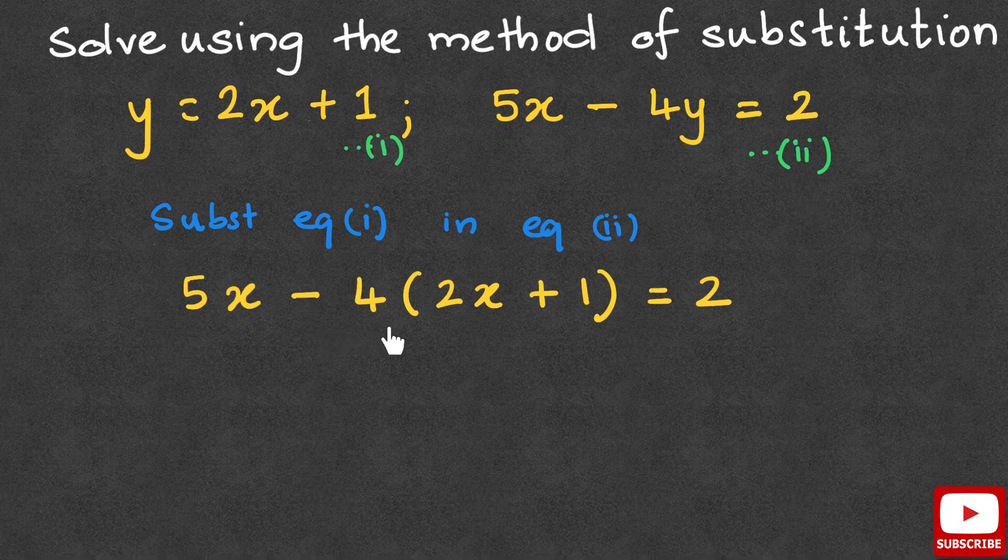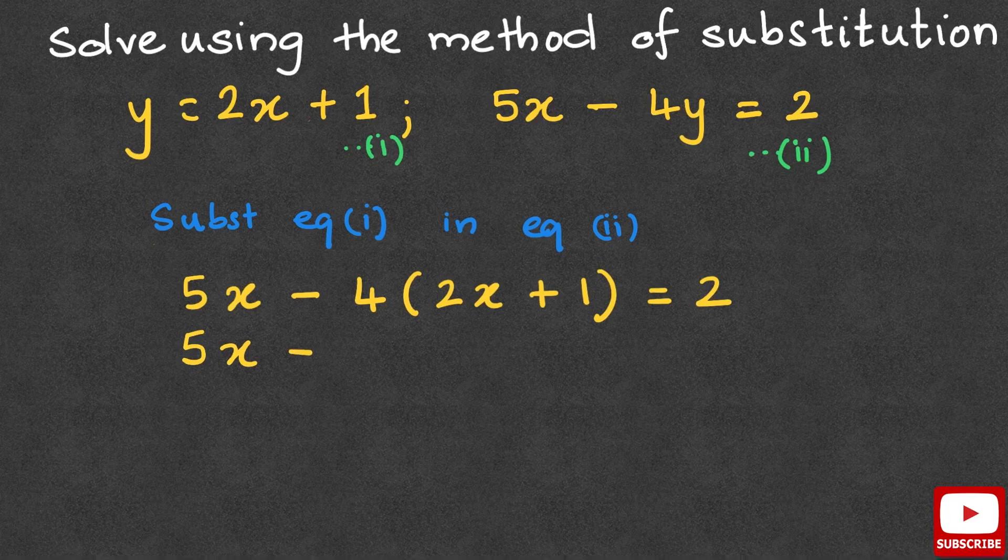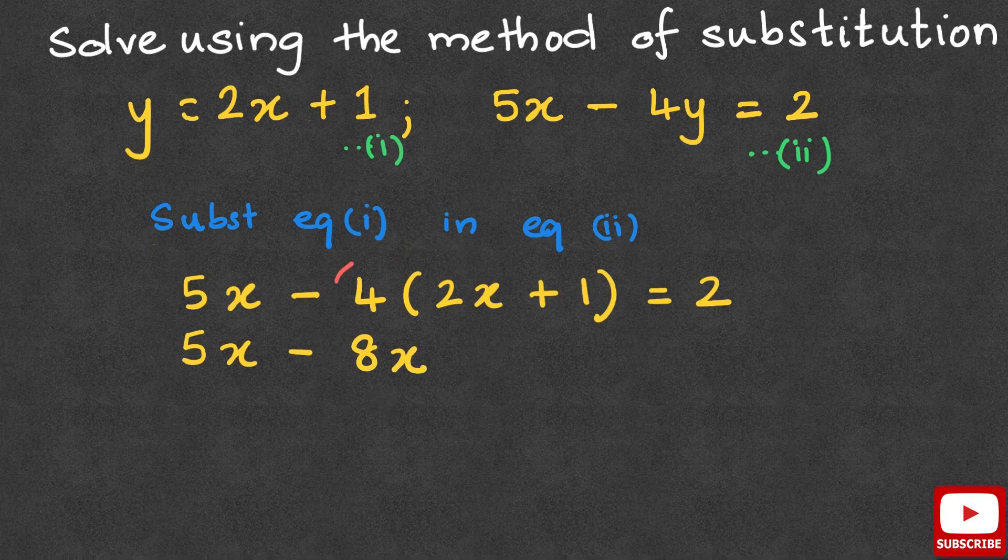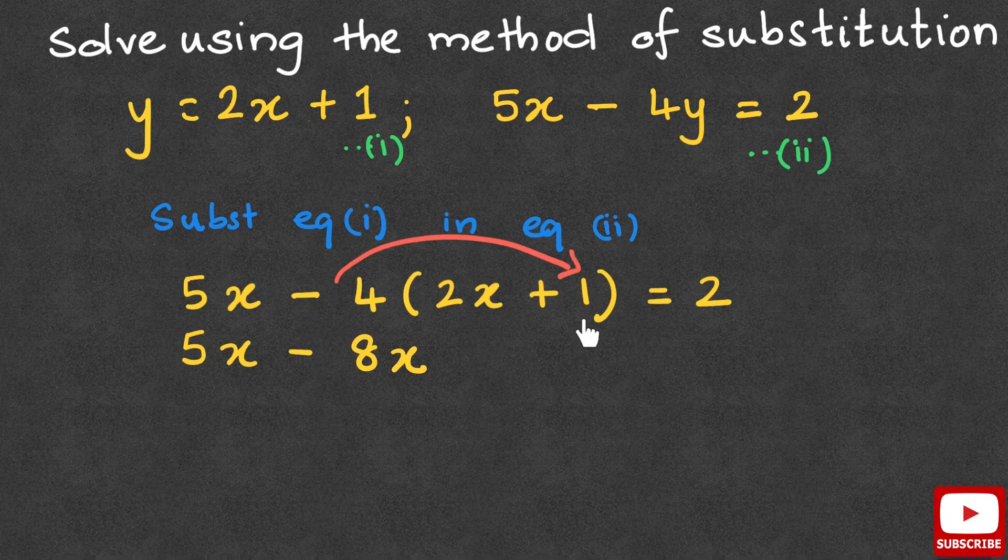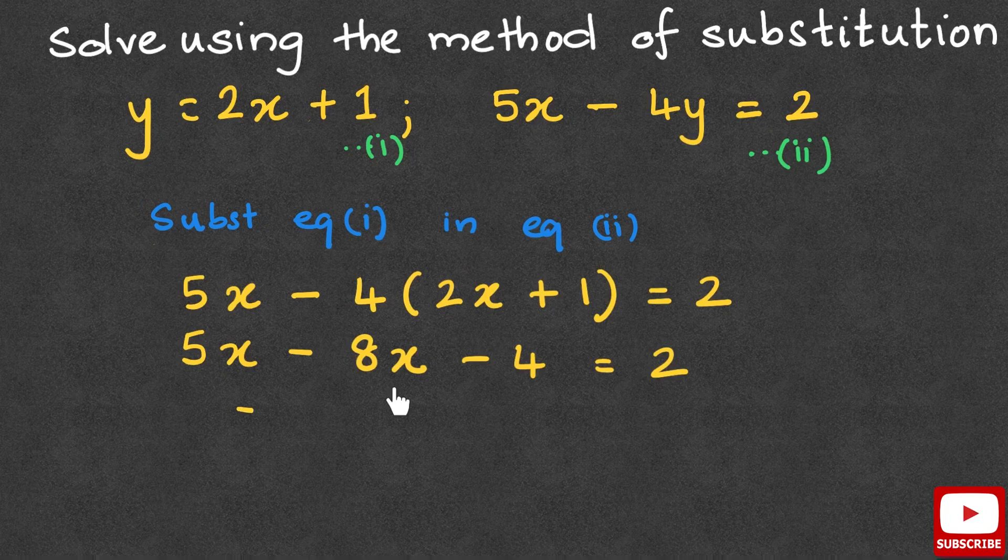Solving this further by opening brackets, we get 5x minus 4 times 2x is 8x, and negative 4 times 1 is negative 4 equals 2. Now adding the like terms 5x and negative 8x, we get negative 3x minus 4 equals 2.